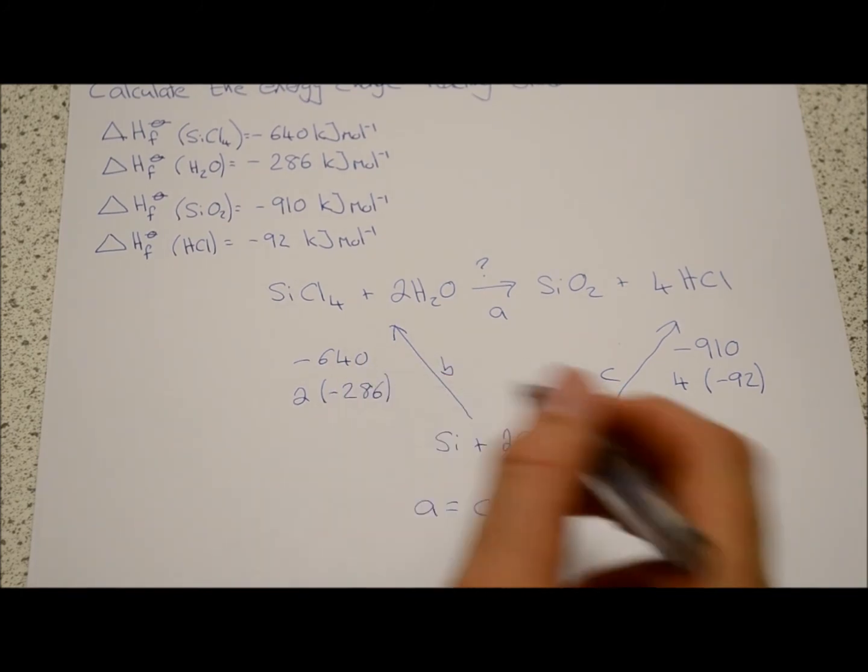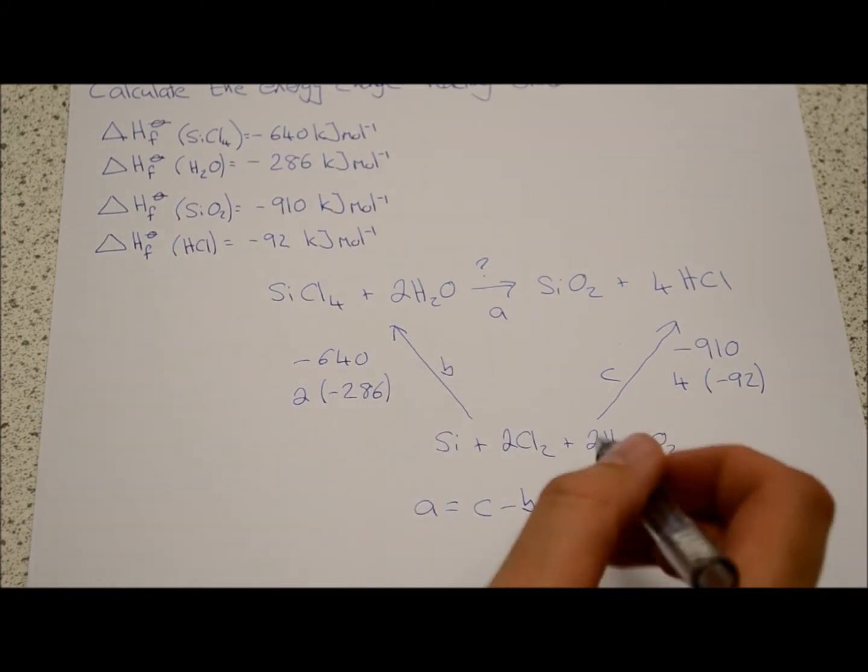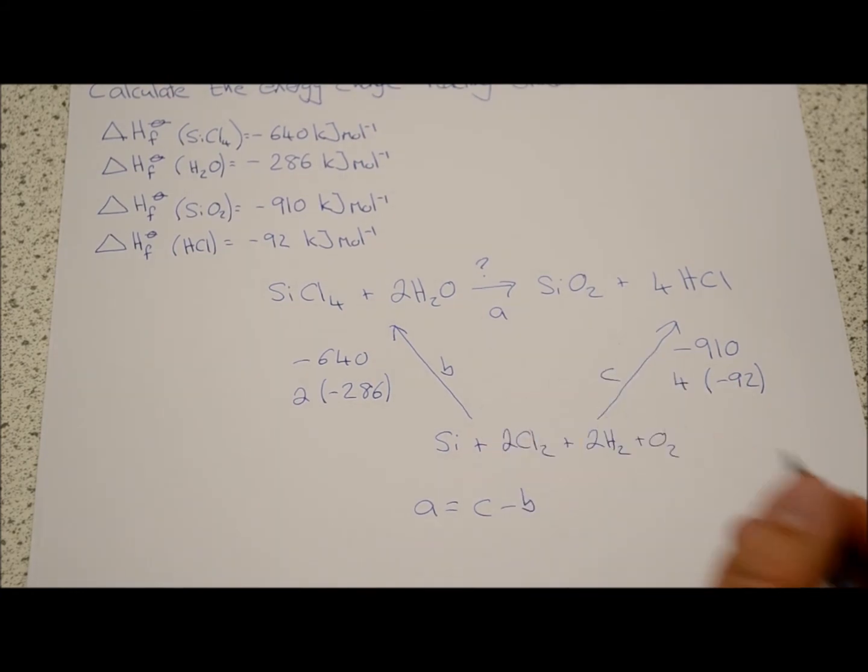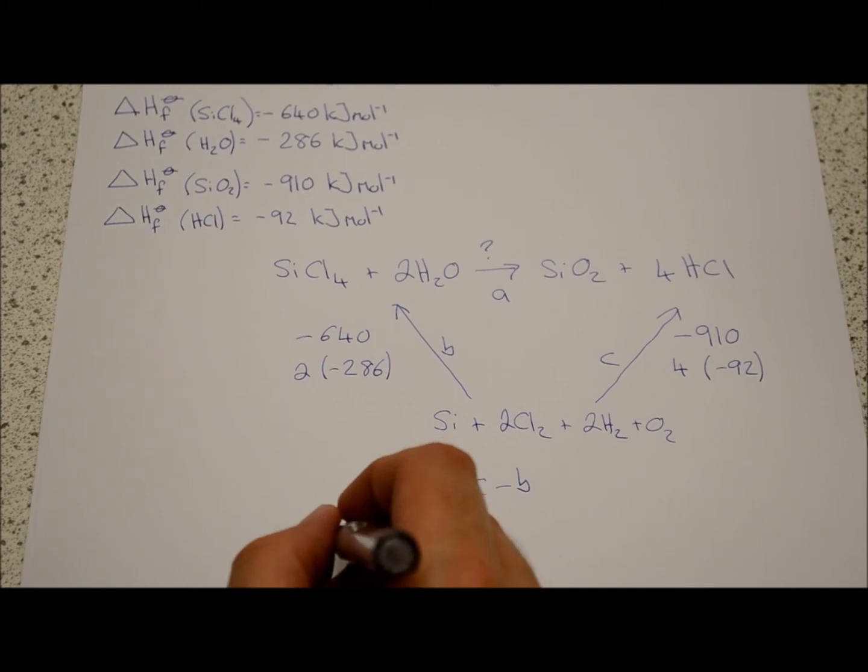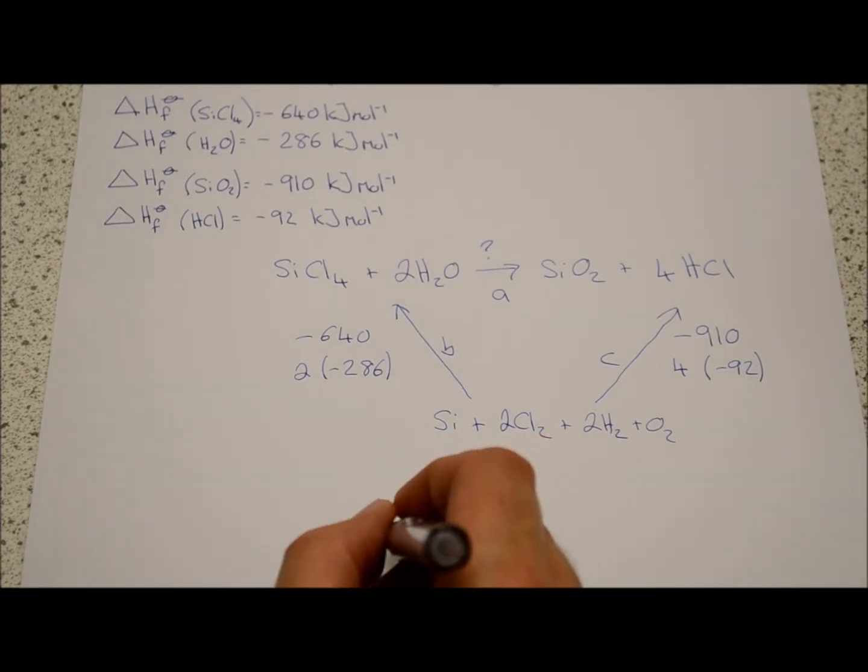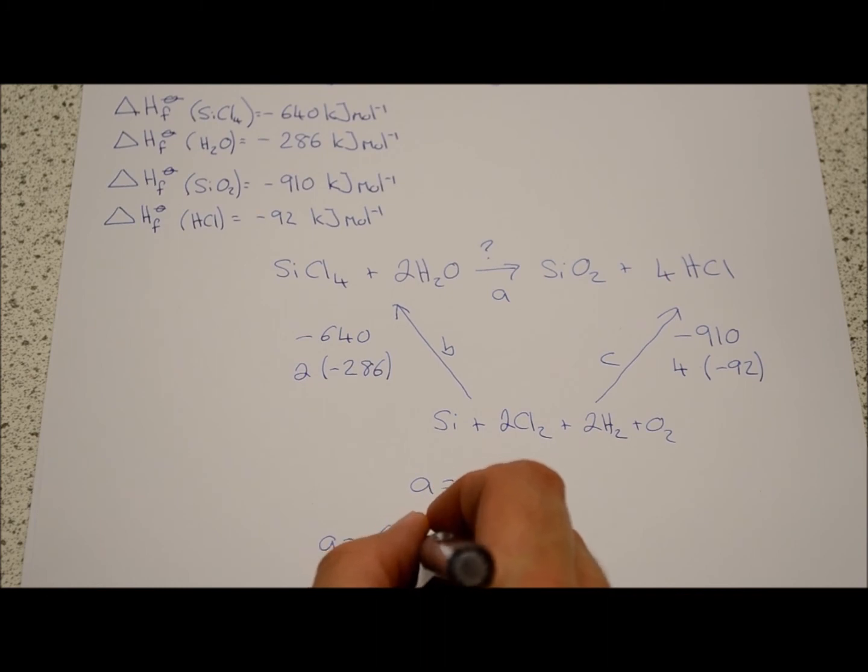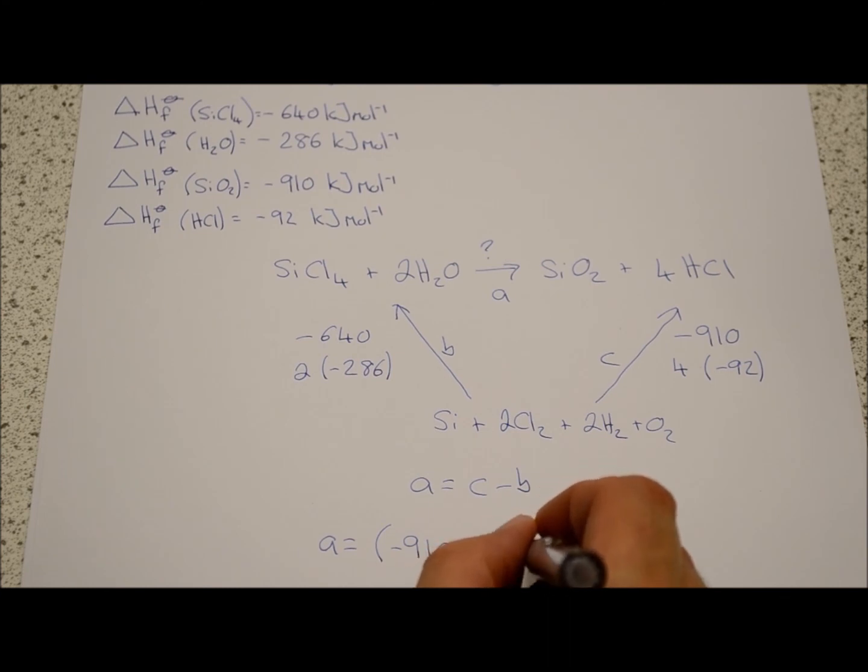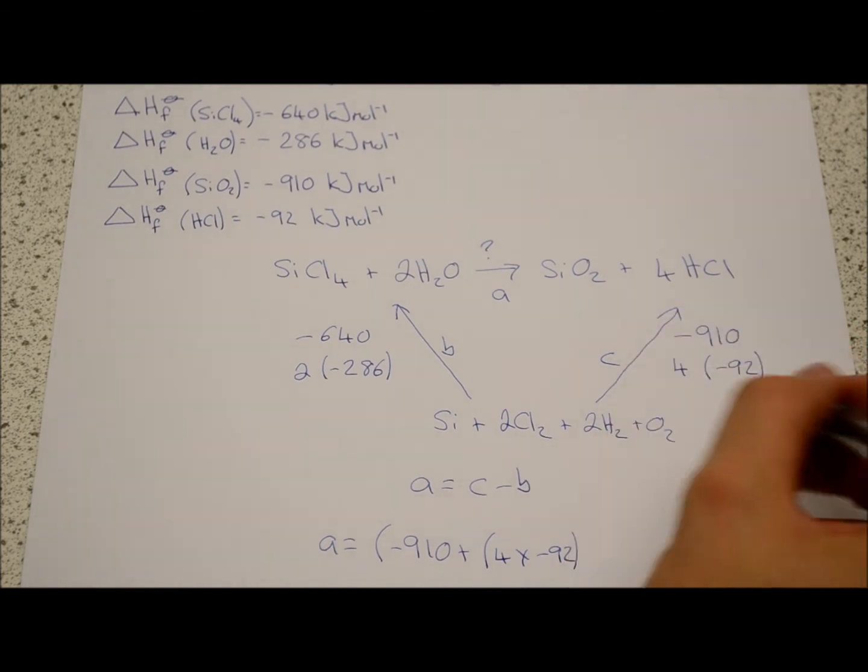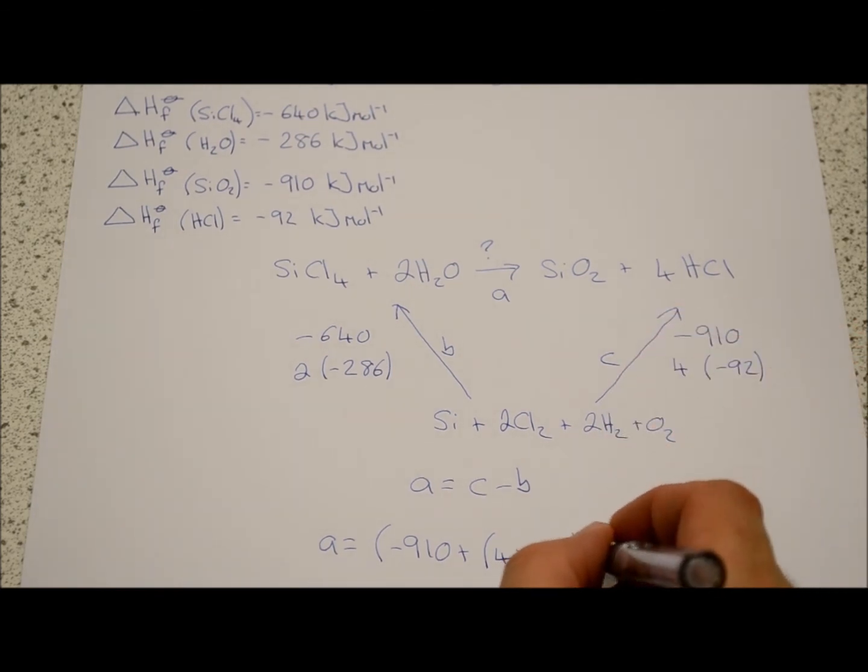Now just be really careful with the maths on this one because we've got multiplication and addition of negative numbers, and it's just awful if you lost marks because of a simple calculator mistake. So I'd set this out as A equals minus nine hundred and ten plus four times minus ninety-two, and that's this path here.